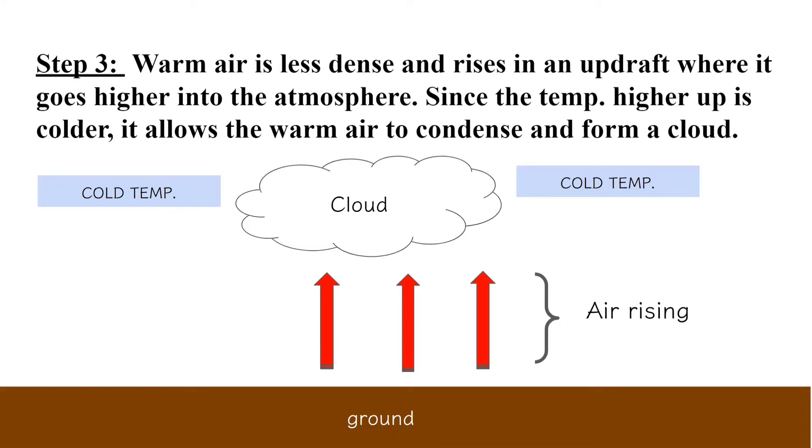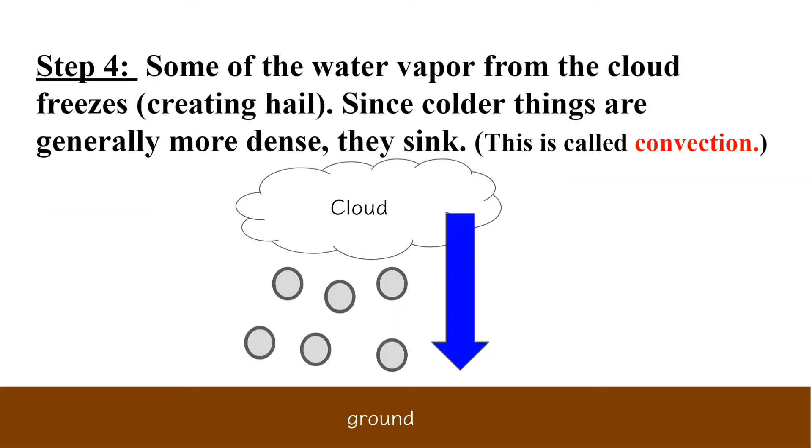Step four: Some of the water vapor from the cloud freezes, creating hail. Since colder things are generally more dense, they sink. This is called convection, and because the hail is dense and heavy, it falls to the ground.